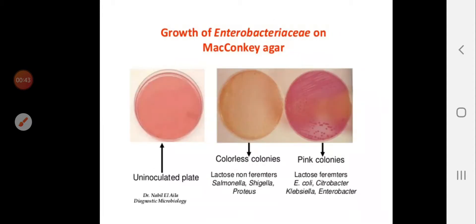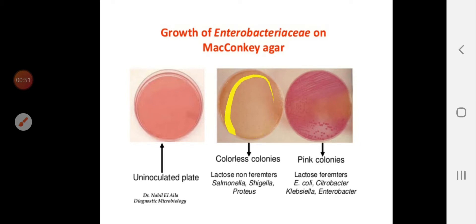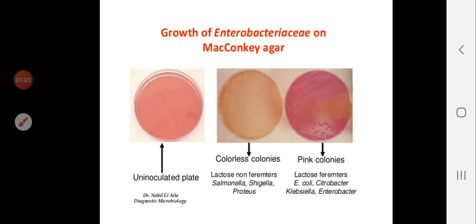This is an inoculated plate of MacConkey's agar showing the colorless or pale color colonies of non-lactose fermenters, like Salmonella, Shigella, and Proteus. The rose pink color colonies of lactose fermenters on MacConkey's agar include E. coli, Klebsiella, Enterobacter, and Citrobacter.